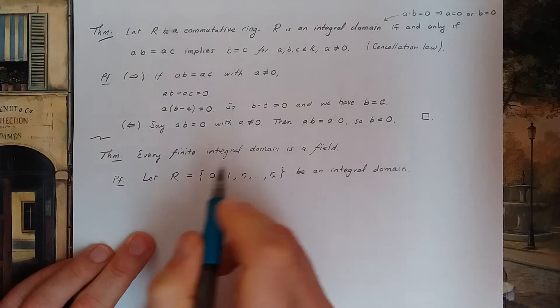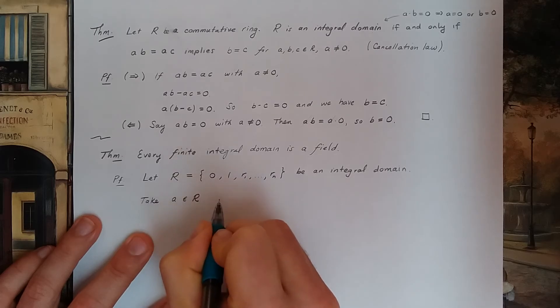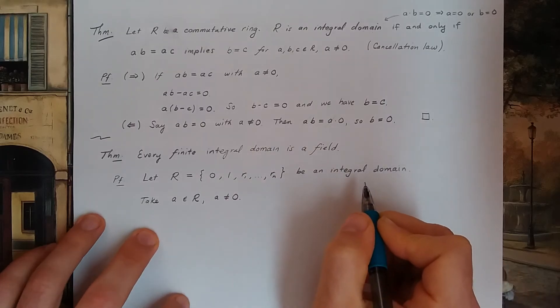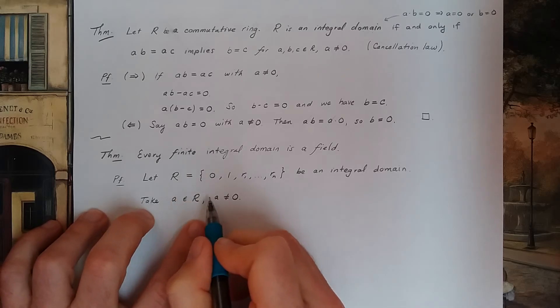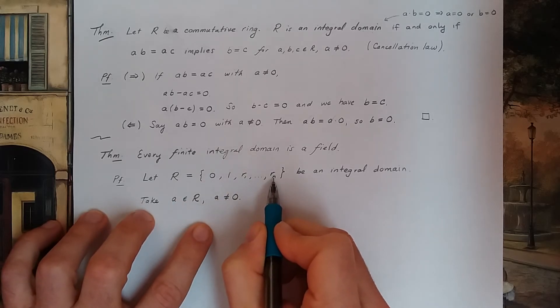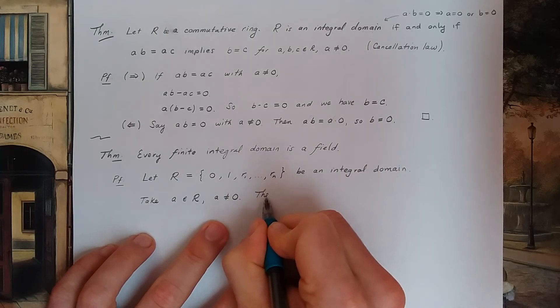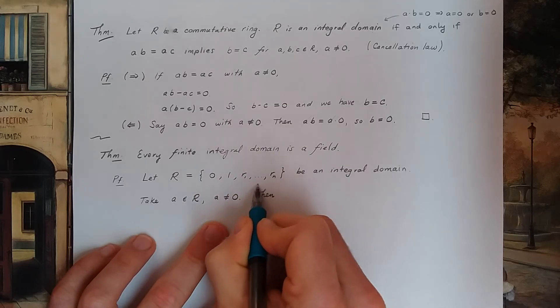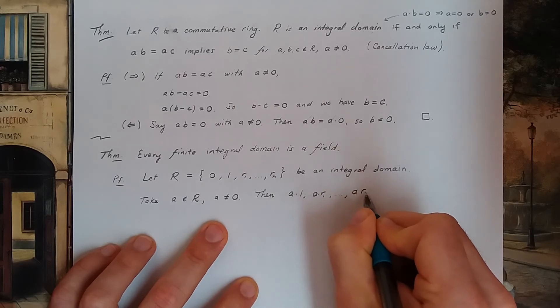I need to prove that I have a field. So I'm going to take an element a in R, a not zero. I hope that a has an inverse, a multiplicative inverse. So I want a times some other element in my ring to give me one. The way that I can get this is by looking at a times every nonzero number in my ring. So look at a times 1, a times r1, a times r2, up to a times rn.